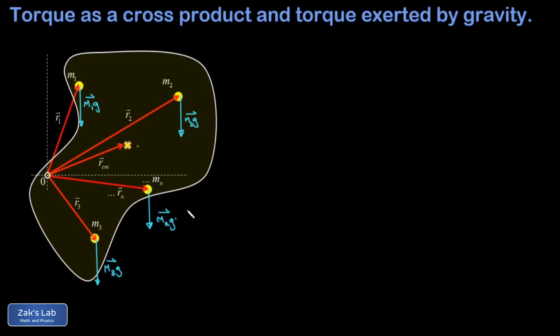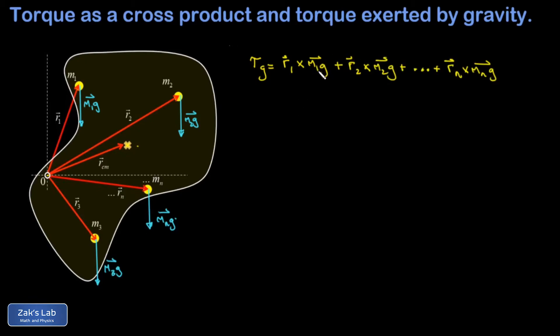I can write down the total torque exerted by gravity by expressing all these torque contributions using the cross product. The torque exerted on m1 is r1 cross m1g, plus r2 cross m2g, and so on. In each of these terms, mi is just a scalar quantity.